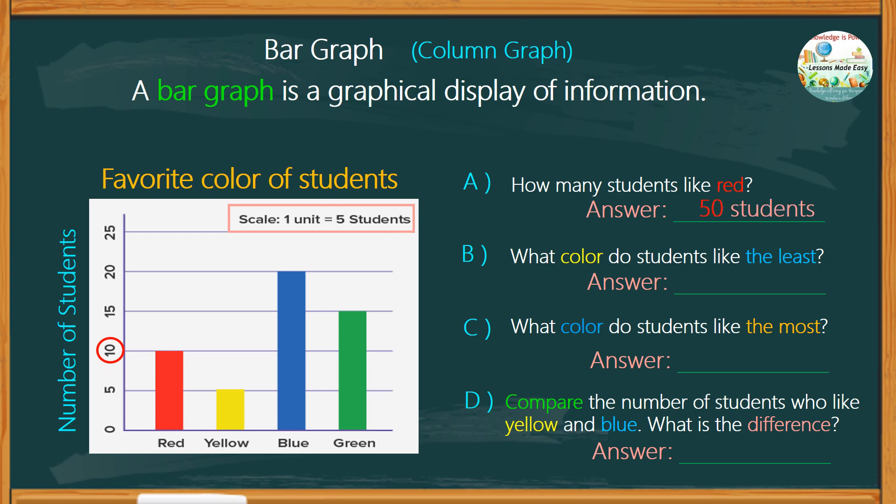And obviously, the least favorite color is yellow, while most students like blue. To check the difference between yellow and blue, we take the value of the color with a bigger number minus the value of the color with a smaller number. That would be 100 for blue minus 25 for yellow. This would give us a difference of 75.